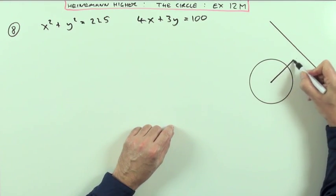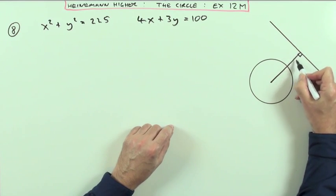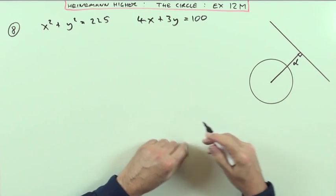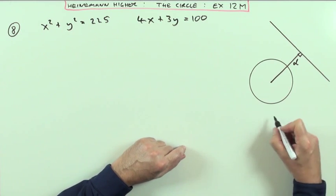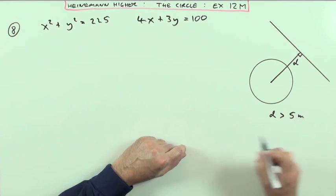Is this gap more than 5 meters? In other words, if you go straight to the wall at right angles, will this gap here—I'll call that D—be greater than 5? That's the condition. D has to be greater than 5 meters.